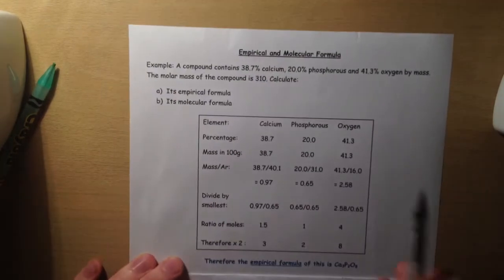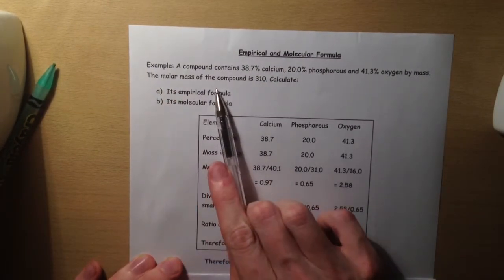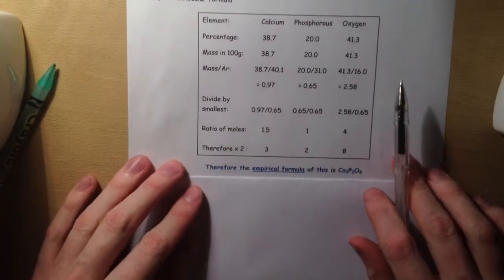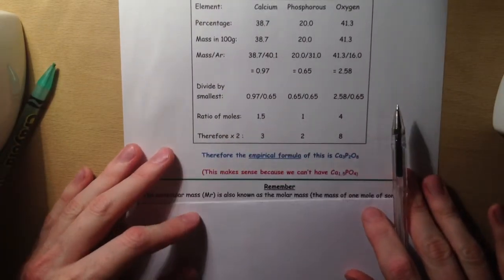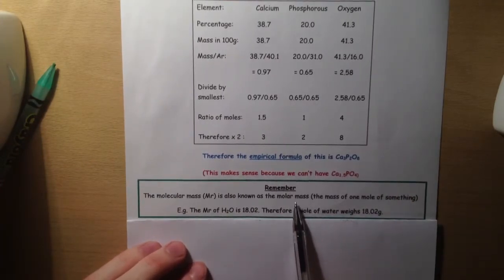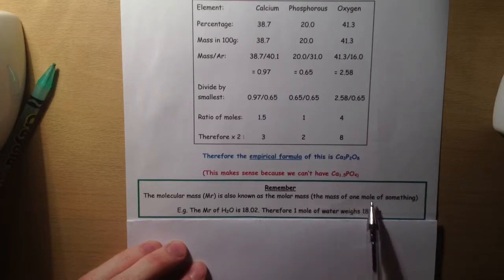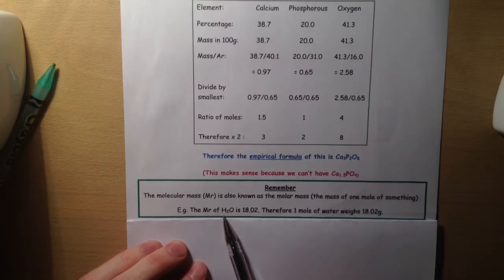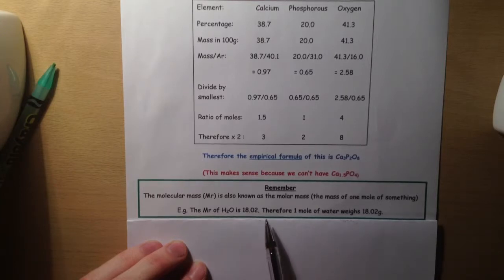Part B is to find out the molecular formula. The molar mass of the compound is 310. What we're going to realize here is that the molecular mass is also known as the molar mass. It's the mass of one mole of something. For example, the molecular mass of water is 18.02: 16.0 for the oxygen and 1.01 for each of the hydrogens. Therefore, one mole of water weighs 18.02 grams.